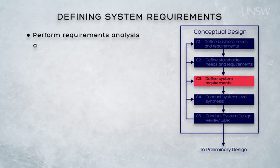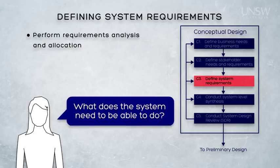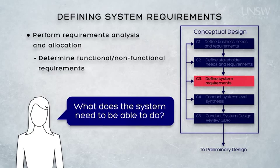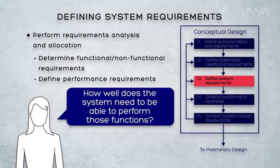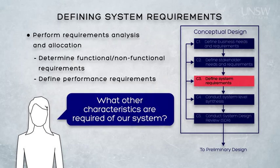We then start performing our system level requirements analysis. We're looking to answer some pretty fundamental questions about our system. What does the system need to be able to do? This is where our functional requirements help — functional requirements define what the system needs to be able to do. How well does the system need to be able to perform those functions? Performance requirements associated with our functional requirements define performance levels. What other characteristics are required of our system? These are typically emergent properties or non-functional requirements associated with our system, and might include factors like reliability, usability, or maintainability.